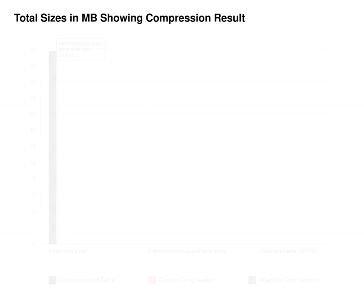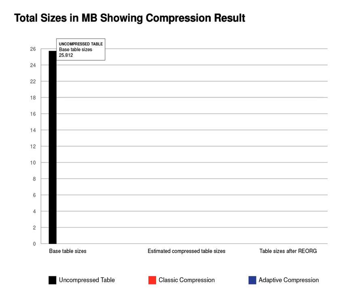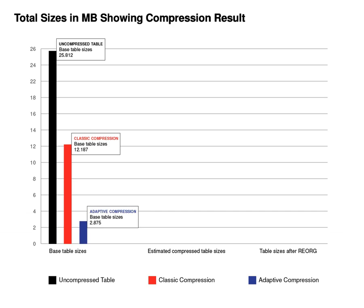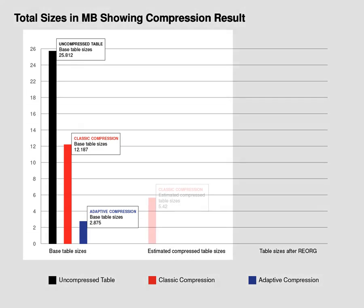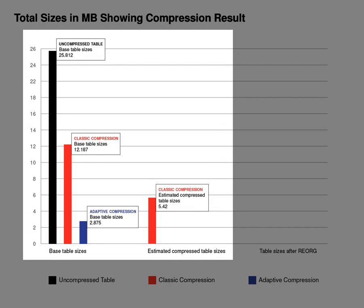In this example, the black bar shows that the uncompressed table has about 30 megabytes of data. The same data is inserted into the classic compressed table and the adaptive compressed table. The red bar indicates the actual size of the classic compressed table, and the blue bar indicates the actual size of the adaptive compressed table. Compression is fully automated. After data is inserted, an administrative function is executed to estimate the compression you can hope to achieve. The estimated space saving for classic row compression is 82%, and the estimated space saving for adaptive compression is 90%.